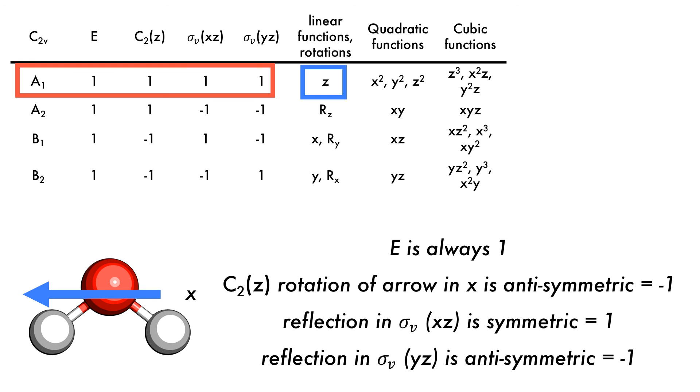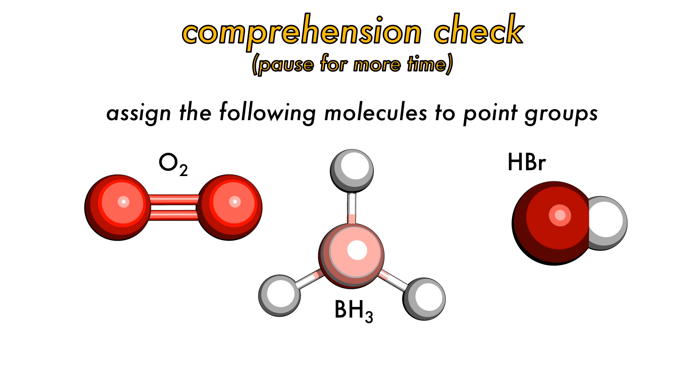Doing a similar process on the Y axis will result in the B2 irreducible representation for water in the C2V point group. Let's check comprehension.